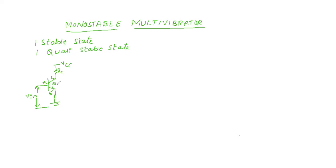How will this transistor Q1 work? When V input is less than 0.7 — what is 0.7? The cut-in voltage for the transistor base-emitter junction is 0.7 volts. This is different for germanium and silicon. When input voltage is less than 0.7, the base and emitter terminals of Q1 will not conduct, so the collector and emitter terminals will be open.